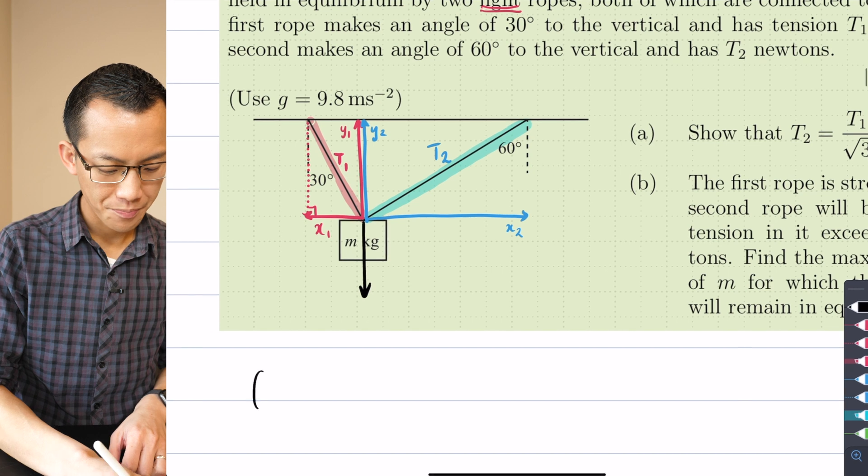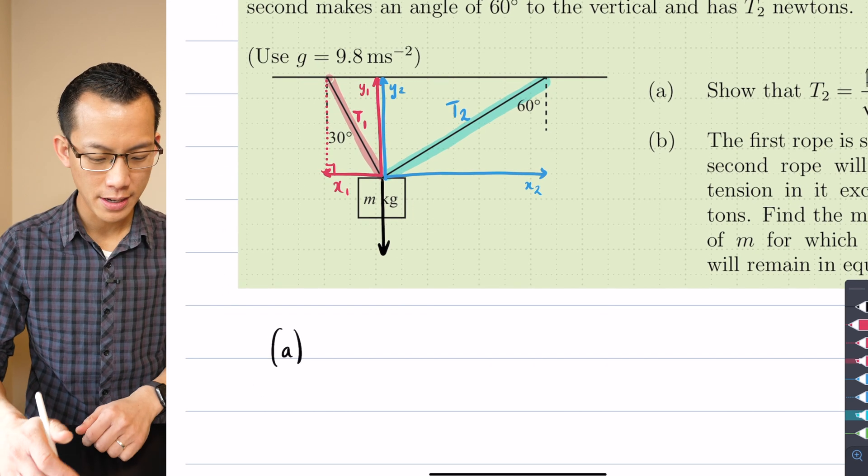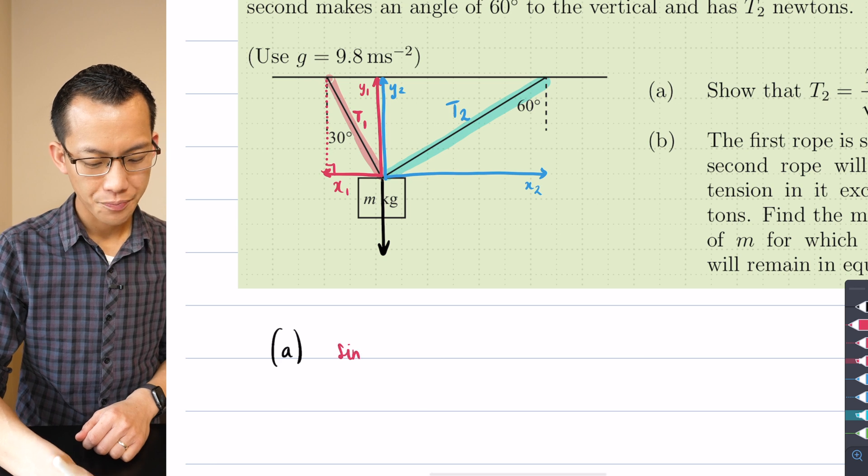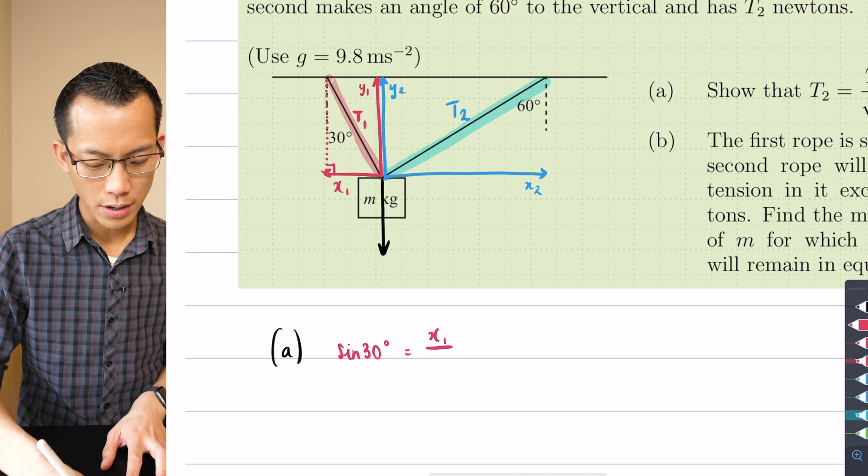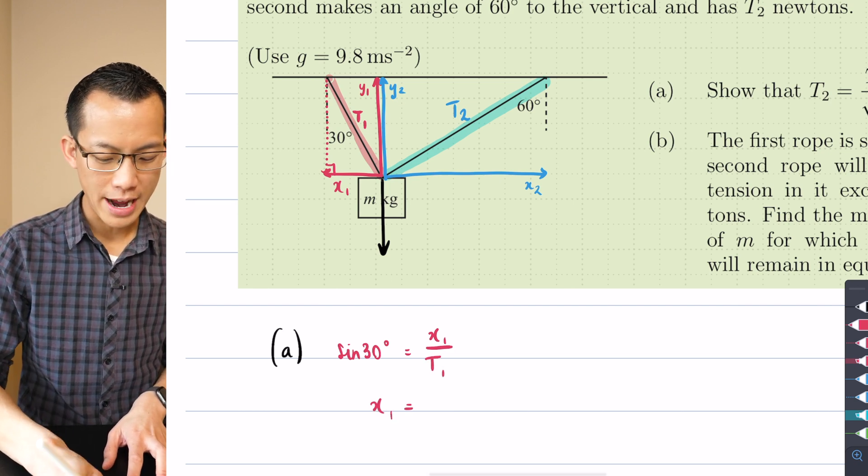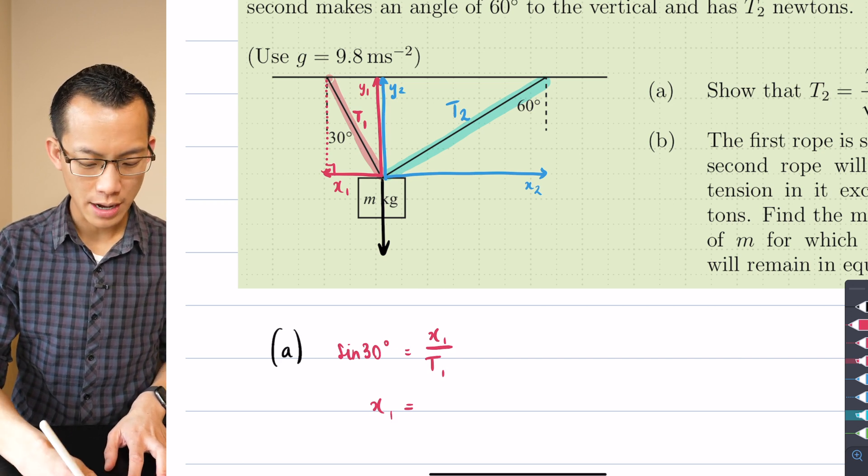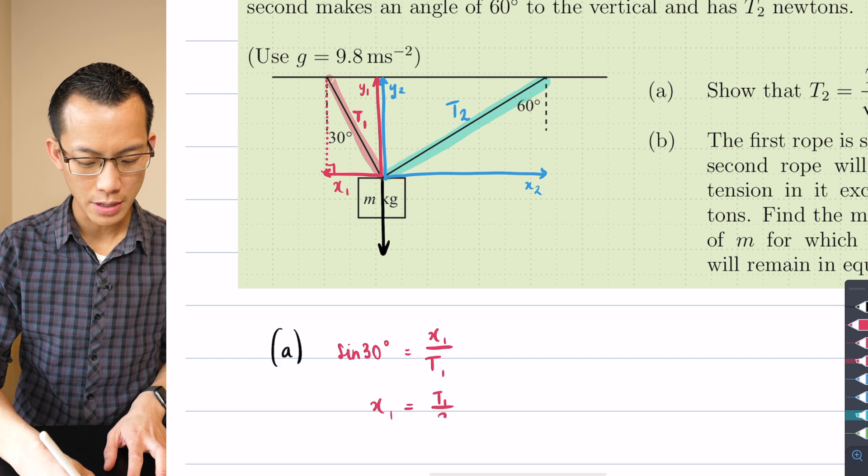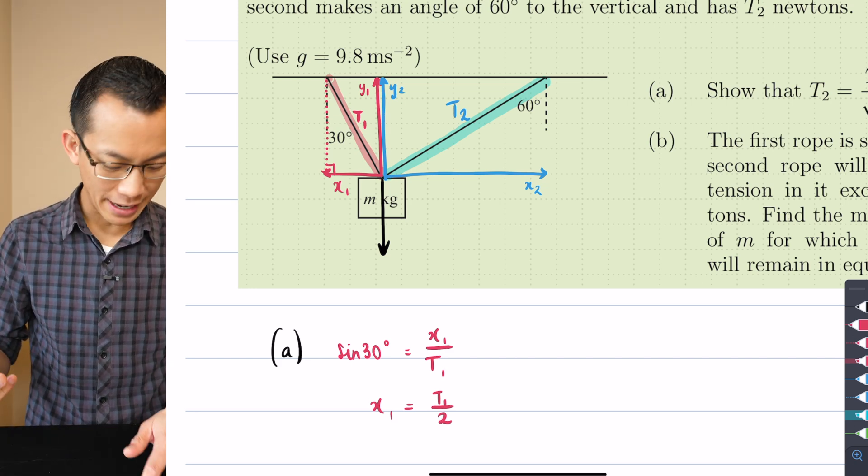So what I'm going to do is, this is part a, I'll put this in red since I'm thinking about this red triangle up here. I can say sine 30 equals opposite which is x1 on hypotenuse which is T1. So now I have an expression for x1, it's going to be T1 times sine 30, but of course sine 30 is a half so it just gives me T1 on 2.